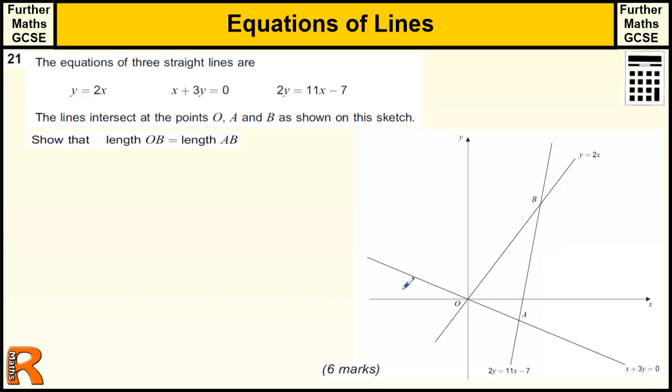So we've got three straight lines with the equations given, and we're told they intersect at O, A, and B. We've got to show that OB and AB are the same length.